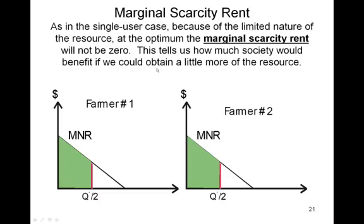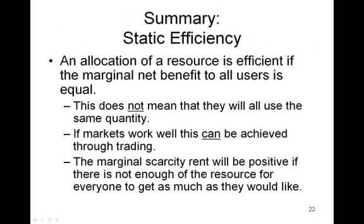And when this happens, that means there's no reallocation of the resource that would lead to a more efficient allocation. So we can now summarize the basic ideas of static efficiency. An allocation of resources is efficient if the marginal net benefits to all users is equal. This does not mean that they'll all use the same quantity. In that very simple example, it came up that way. But in general, we want to allocate the resource to those who value it most. Markets can achieve this, and that's exactly what a price mechanism does. And the marginal scarcity rent will be positive if there's not enough of the resource for everyone to get as much as they would like at the efficient allocation.